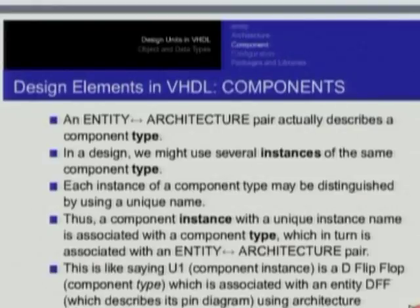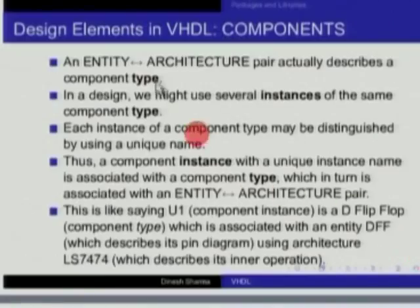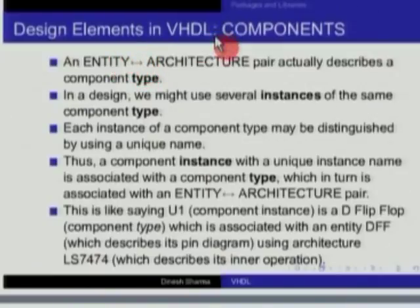We understand entities and architectures, but in the case of structural description an architecture will require components which are interconnected. These components need not all be basic components. For example, the ALU in an 8085 would be a component. ALU will be another VHDL entity that must be made into a component so that it can be instantiated in the 8085 entity. An entity-architecture pair actually describes the component type — for example, a D flip-flop described by an entity and architecture describes how D flip-flops in general operate.